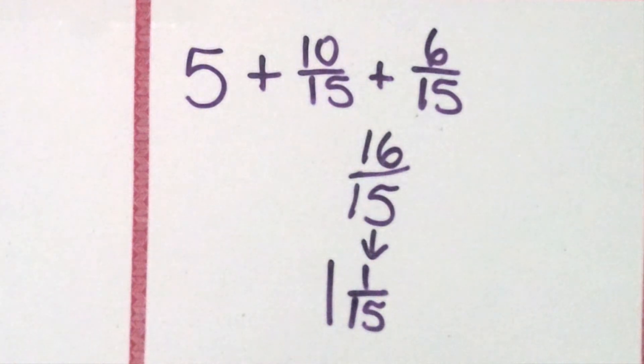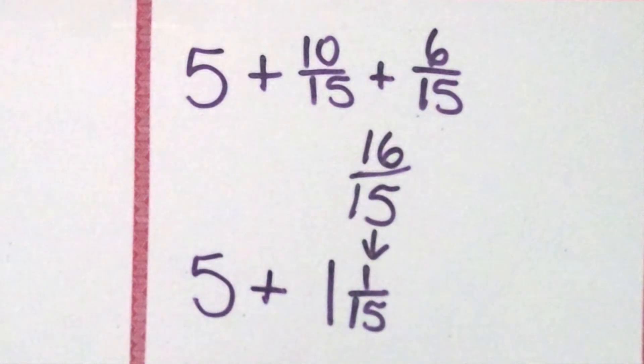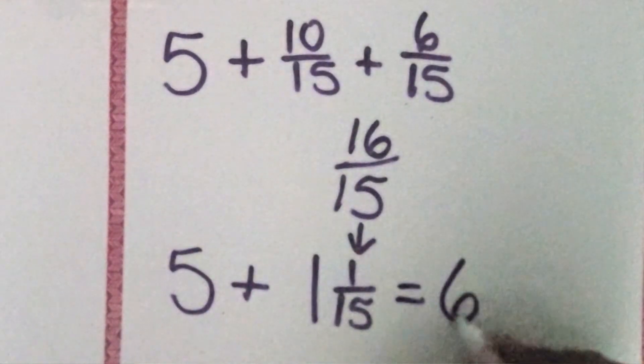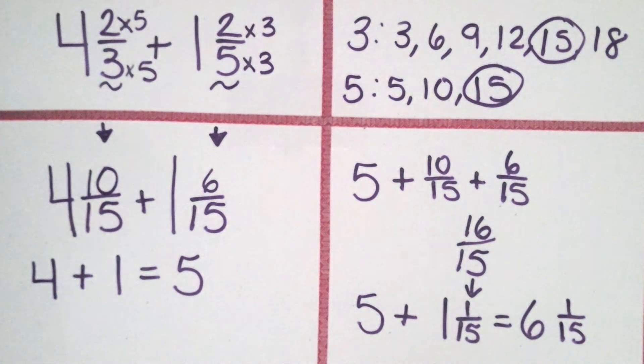Finally, let's join the 1 1/15 with the 5 wholes. 5 plus 1 1/15 equals 6 1/15. So Fred's dogs together eat 6 1/15 bags of dog food each month.